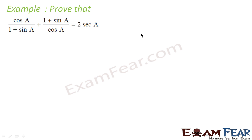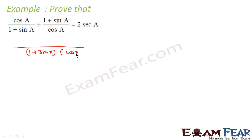Next, we have to prove that cos A/(1 + sin A) + (1 + sin A)/cos A = 2 sec A. Let's take the LHS. We'll take the LCM, which is (1 + sin A)·cos A. The numerator becomes cos²A + (1 + sin A)².